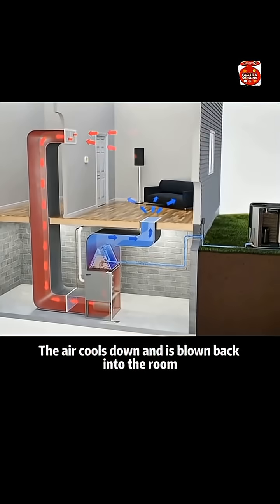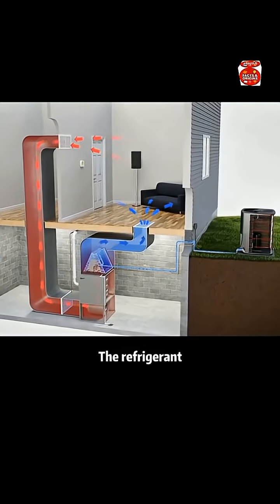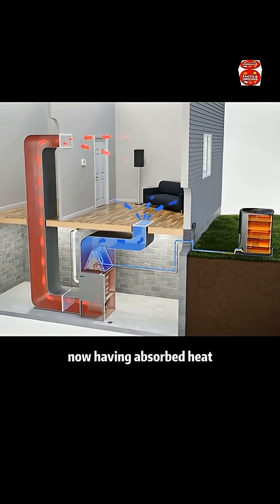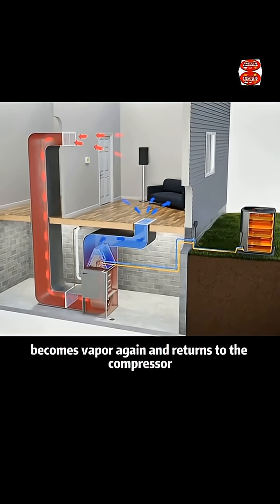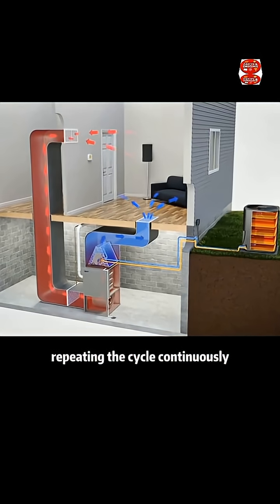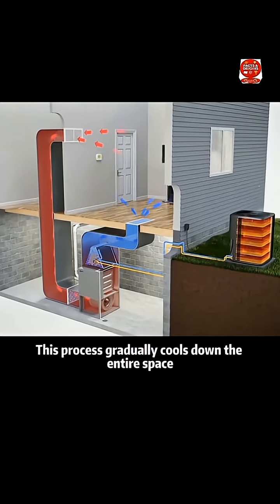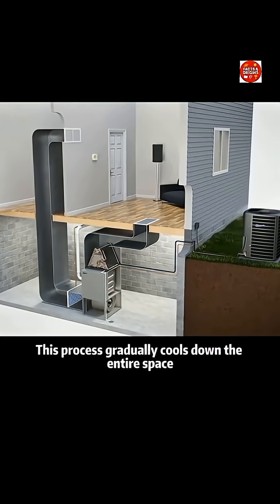The air cools down and is blown back into the room. The refrigerant, now having absorbed heat, becomes vapor again and returns to the compressor, repeating the cycle continuously. This process gradually cools down the entire space.